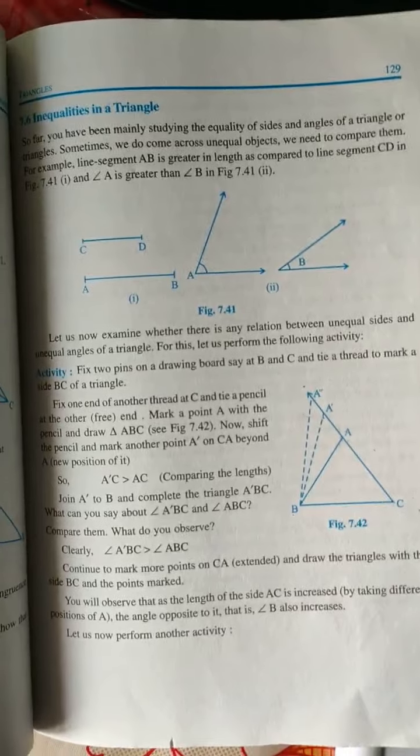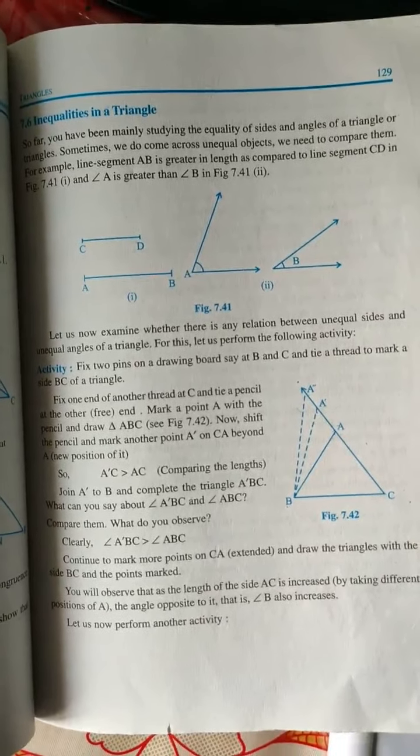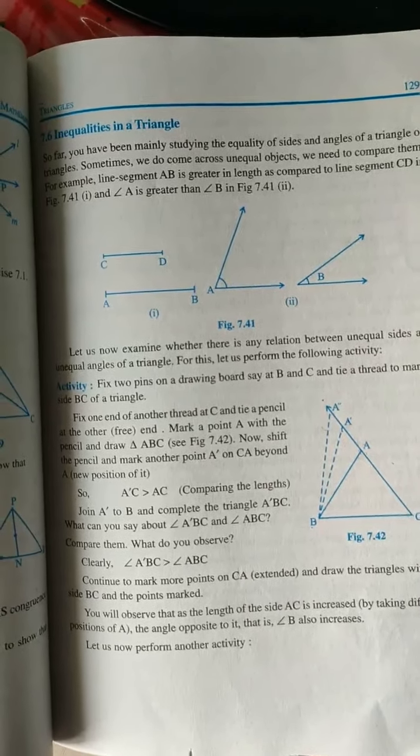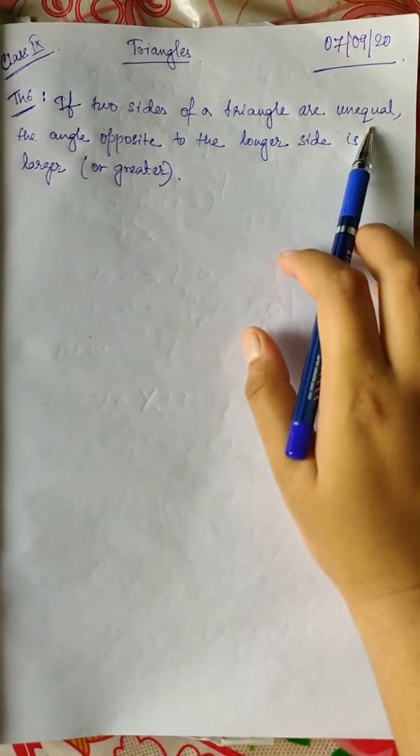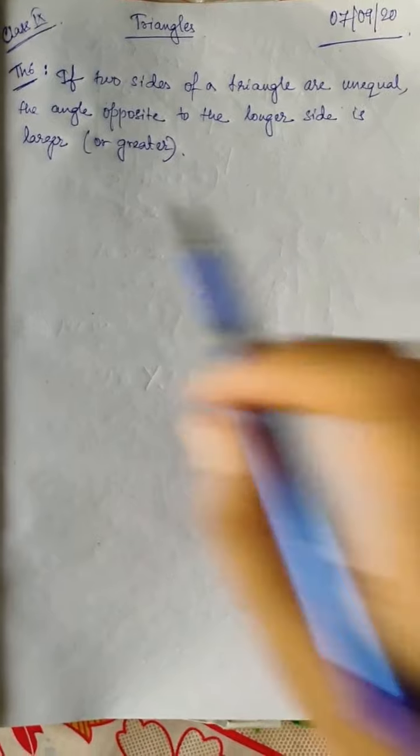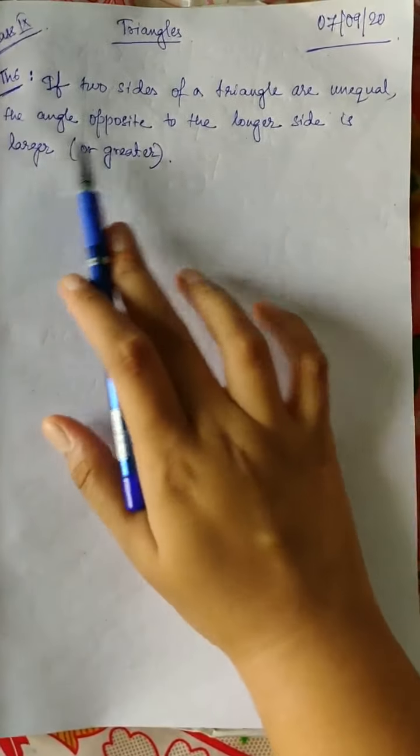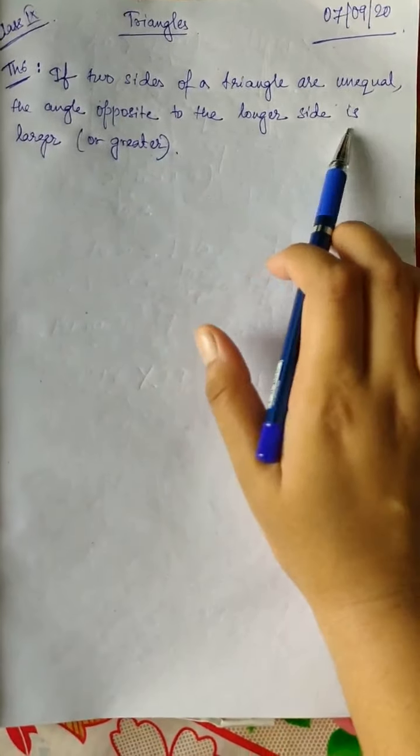There are certain theorems for inequalities, and next we will learn those theorems. So now we have theorem 6. Theorem 6 says that if two sides of a triangle are unequal — meaning it won't be any isosceles triangle — what happens is the angle opposite to the longer side is larger. So let us now draw a triangle.